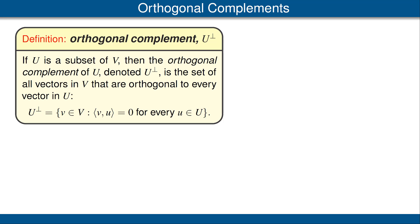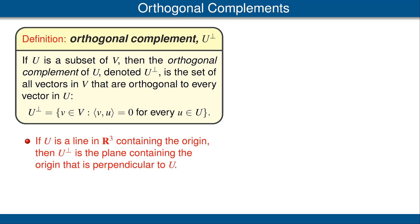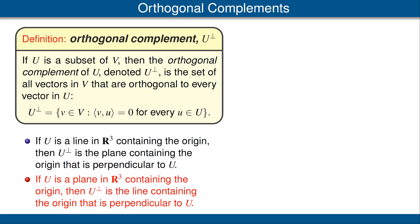Let's look at two examples, both in R3. First, if U is a line in R3 containing the origin, then the orthogonal complement of U is the plane containing the origin that is perpendicular to the line U. For our second example, if U is a plane in R3 containing the origin, then the orthogonal complement of U is the line containing the origin that is perpendicular to the plane U.